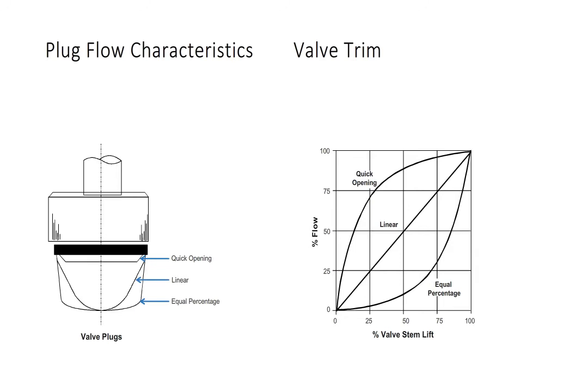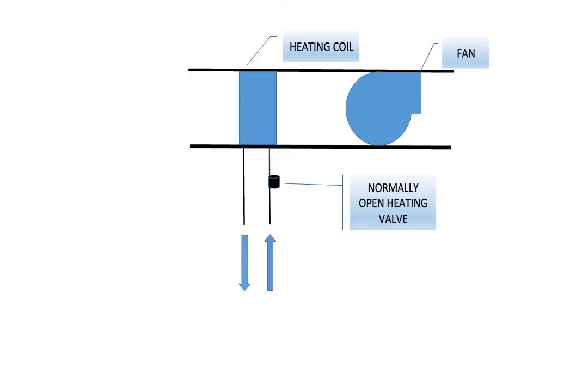In this illustration, we have a coil and a duct with a fan to move air across the coil. We will be heating the air with hot water going through the coil. We have a heating valve feeding the coil with our hot water.